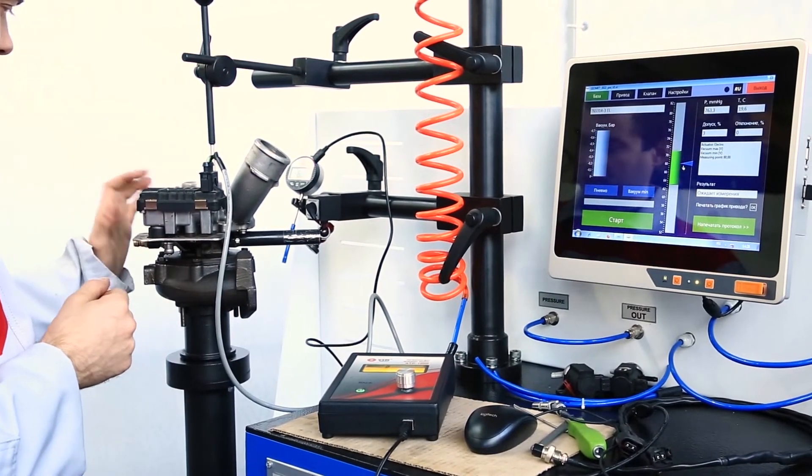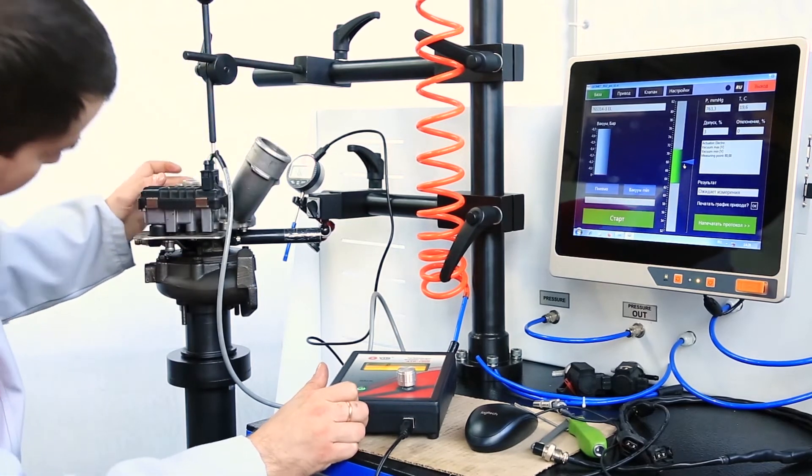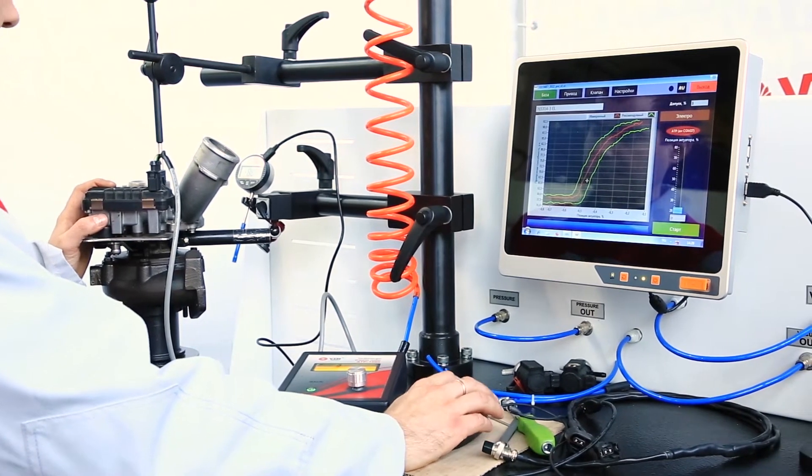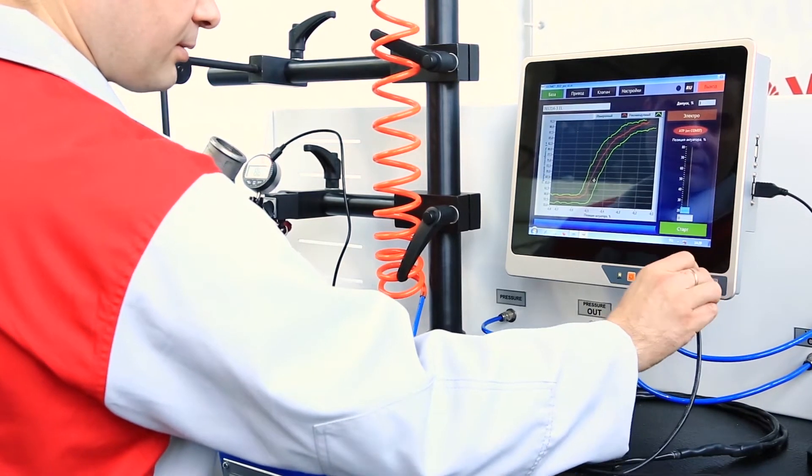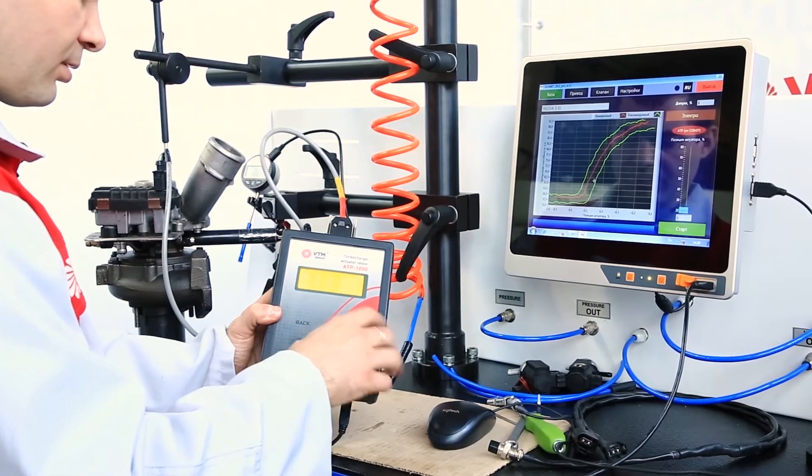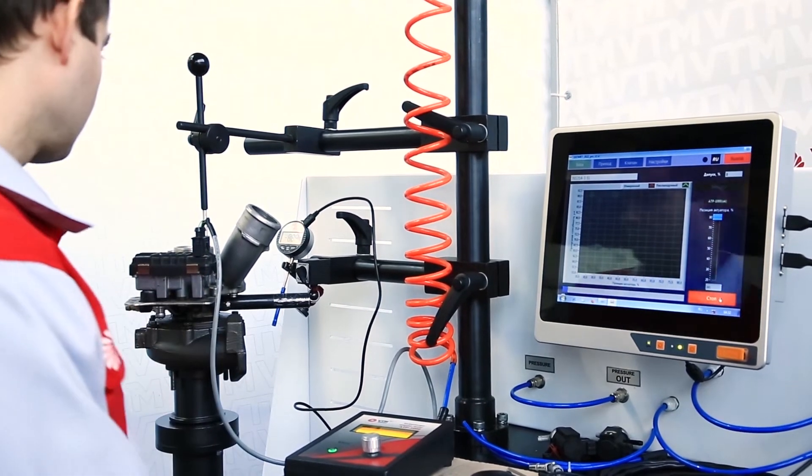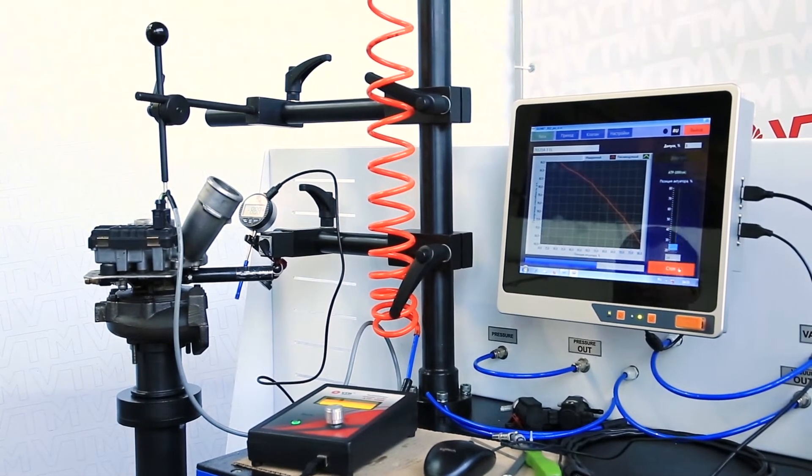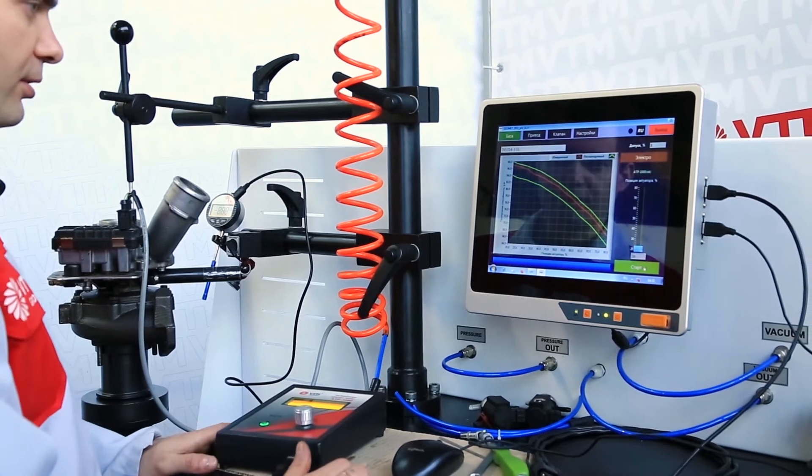As practice has shown, this is a rather narrow window of opportunity. It can be adjusted within fairly small limits. We can also plot graphs and see if our turbocharger meets the test plan. To do this, you need to connect the device to a computer. We can see that our turbocharger meets the test plan.